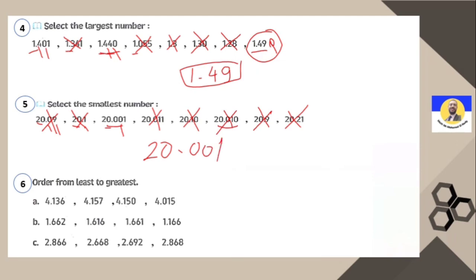Order from least to greatest. Looking at the ones digit: here 4, 4, 4, 1, 1, 0. Zero is the smallest — it goes first. Then the ones with 1: comparing tenths — 1.3 is second, then the fives and sevens follow. Letter B: 1.6, 1.6, 1.21. The smallest is 1.21. Then 1.616 is second, then 1.662 and 1.661, with the fourth number being 1.662 thousandths.